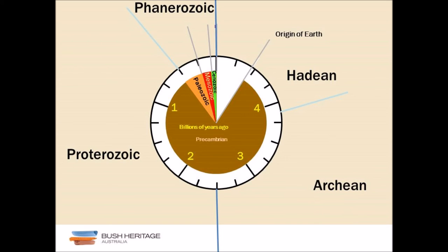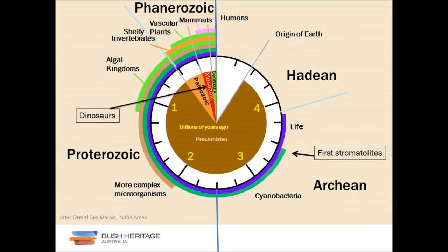After the Hadean comes the Archean — a time of plate tectonics and early Earth forming — then on to the Proterozoic and the Phanerozoic. The first stromatolites are now dated at 3.7 billion years from the Ishua group in Greenland. Previously, the first fossil evidence of life was stromatolites dated 3.45 billion years ago in the Pilbara, Western Australia.